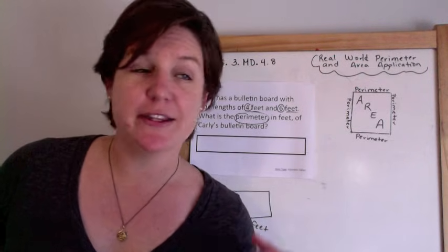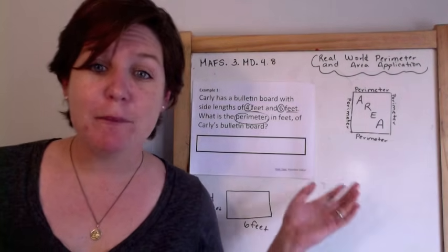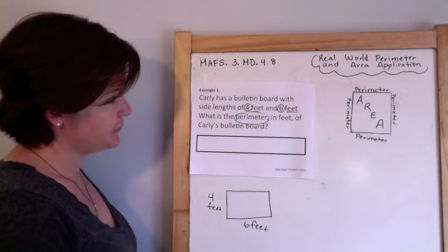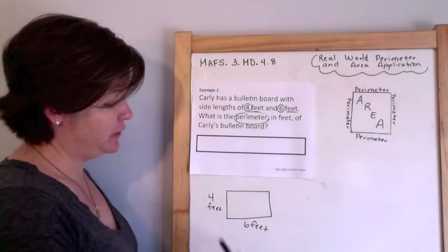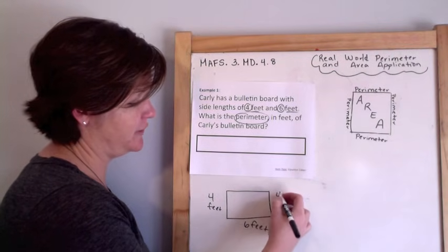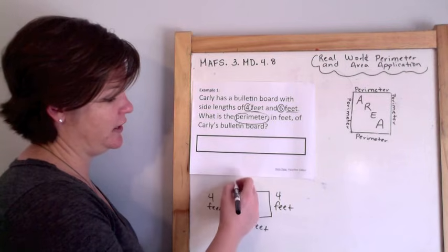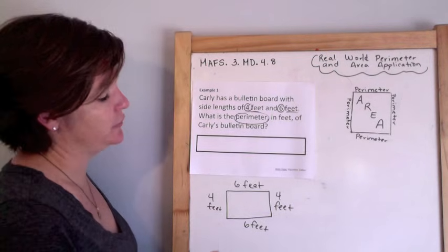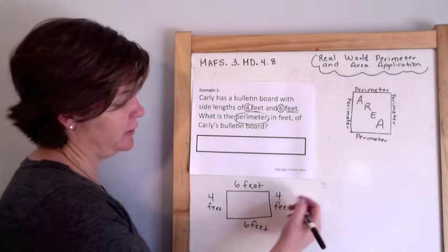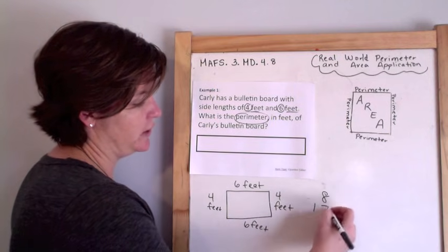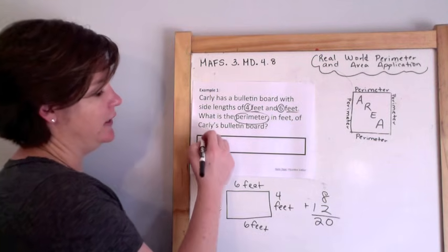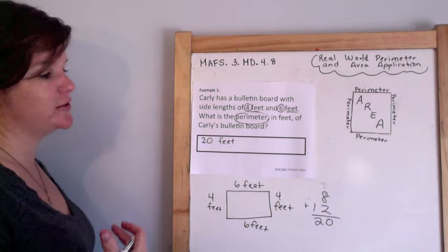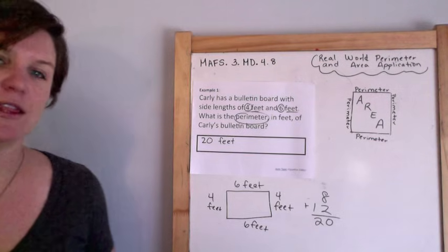We've been working a lot with area in the past couple episodes — don't get confused. Perimeter is different. You are finding the total when you add up all the sides or the border. We know that whatever one side of a rectangle is, the opposite side will be the same. So if that's 4 feet, this will be 4 feet, and if this is 6 feet, the opposite side is also 6 feet. So: 4 plus 4 is 8, 6 plus 6 is 12, add them up and we get 20. The perimeter is just 20 feet — we're not multiplying, so we don't square it.